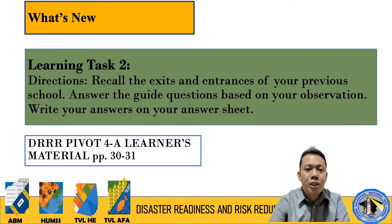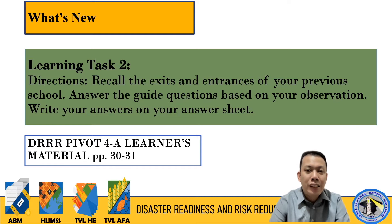Under 'What's New,' Learning Task Number Two: recall the exits and entrances of your previous school. Think about the entrances and exits — did your school have a gate or just a door to enter? Was the entrance also the exit? Answer the guide questions based on your observation and write your answers on your answer sheet.